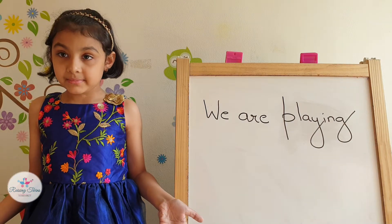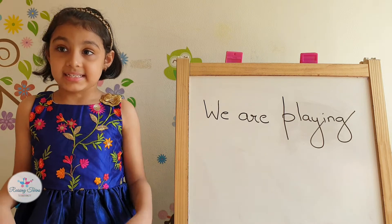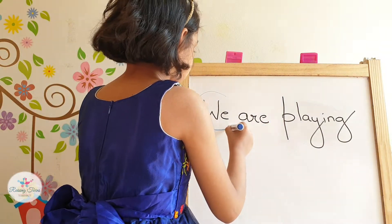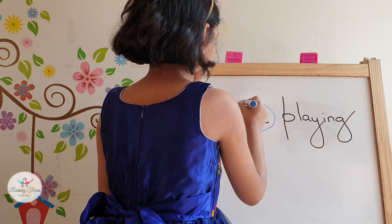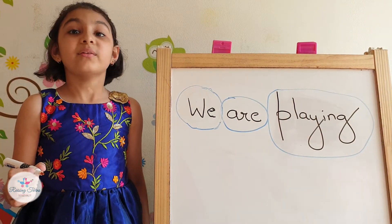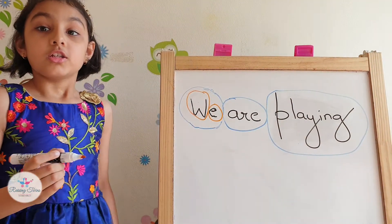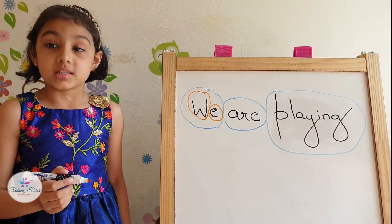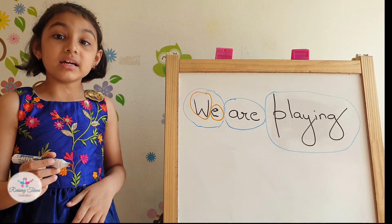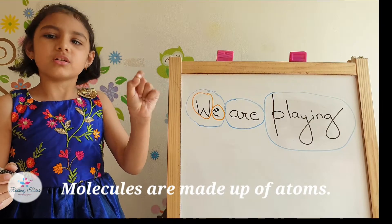So everything is made up of atoms. What are molecules then? Confused? Take for example any sentence, like this one. Circle all the words in it. Now circle the letters in it, for example. You see, this sentence is made up of words, and words are made up of letters. So the letters are the smallest unit of a sentence. Similarly, everything is made up of molecules, but molecules are made up of atoms. So atoms are the smallest unit of everything.